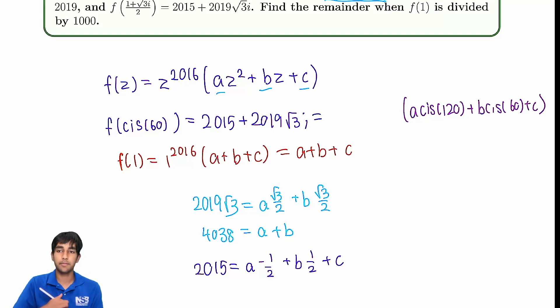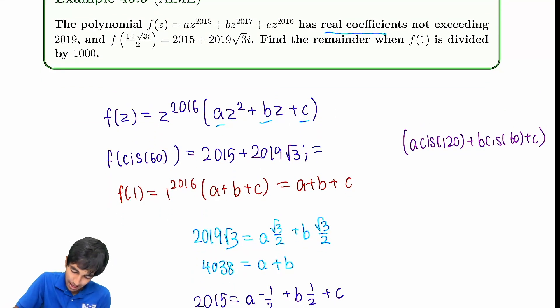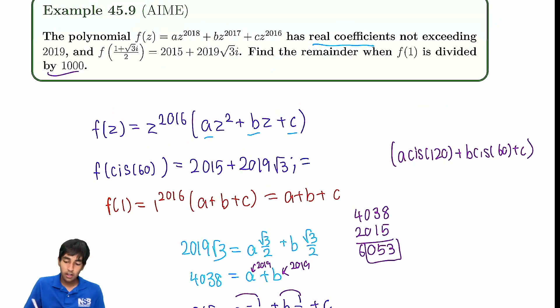So this will give us our value of 2015. So we have to somehow find c from this equation. How should we go about doing that? We'll take a look at this first condition we were missing. Real coefficients not exceeding 2019. That means both of these have to be exactly 2019. Because for their sum to be 4038. Then we can plug in 2019 here, 2019 here. And that means that this must be 2015, because these two terms cancel each other out.